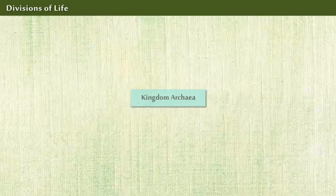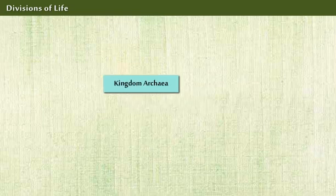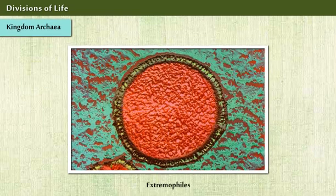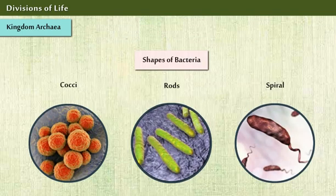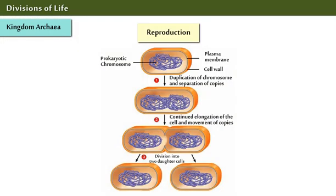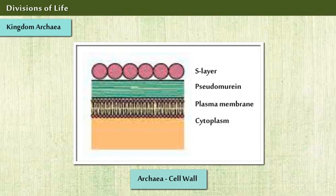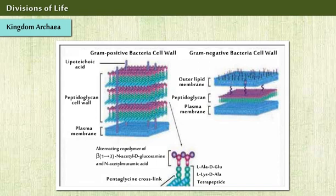The first kingdom, Archaea, is delineated as the group of extremophiles that are either single-cellular, filamentous, or aggregates. They can stain either gram-positive or gram-negative, and may be spherical, rod-shaped, spiral, or pleomorphic. They replicate either by binary fission or fragmentation.